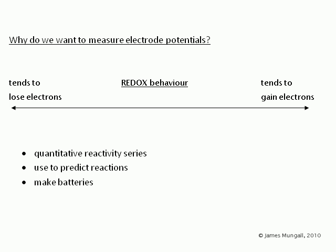So why do we want to measure electrode potentials? What's the big picture here? We want to build up a quantitative reactivity series of redox behavior — at one end, the species which really strongly tend to lose electrons, and those which gain electrons strongly at the other end. This way we really understand redox chemistry much better.